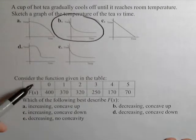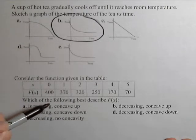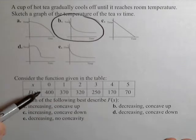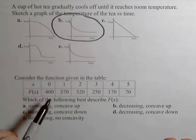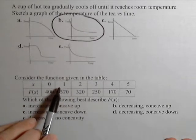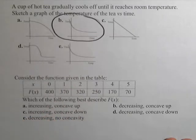The next one, consider the table, and we have to determine which best describes the data of f of x. Well first off, notice the numbers are going down as the input increases, so automatically it's decreasing.